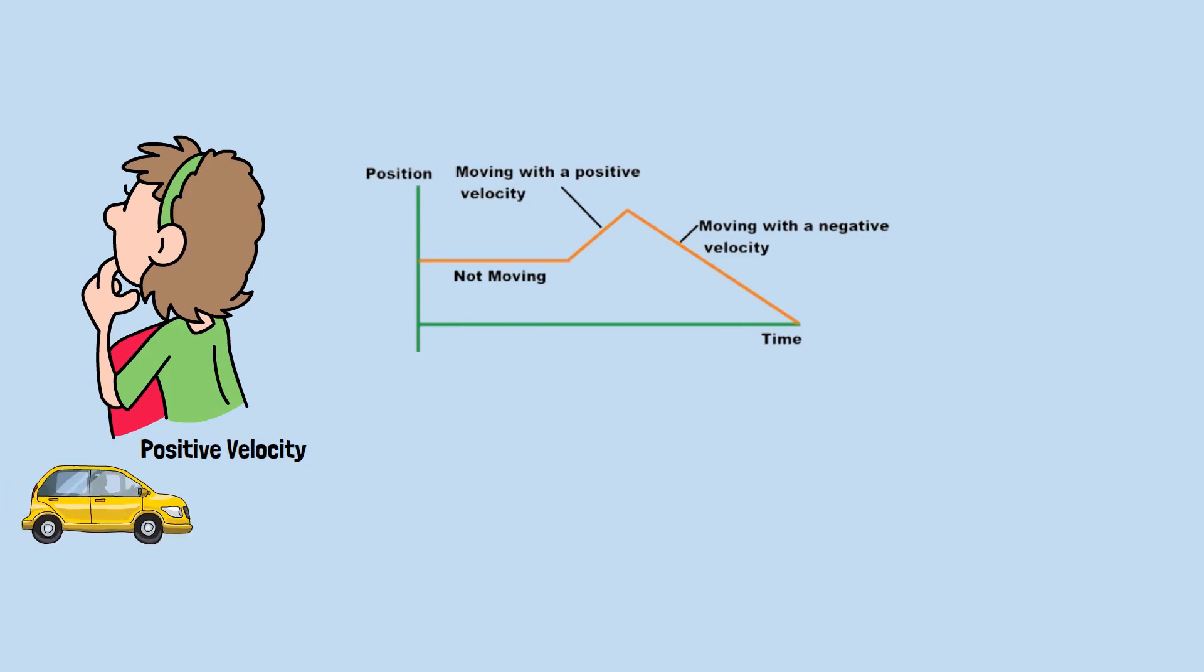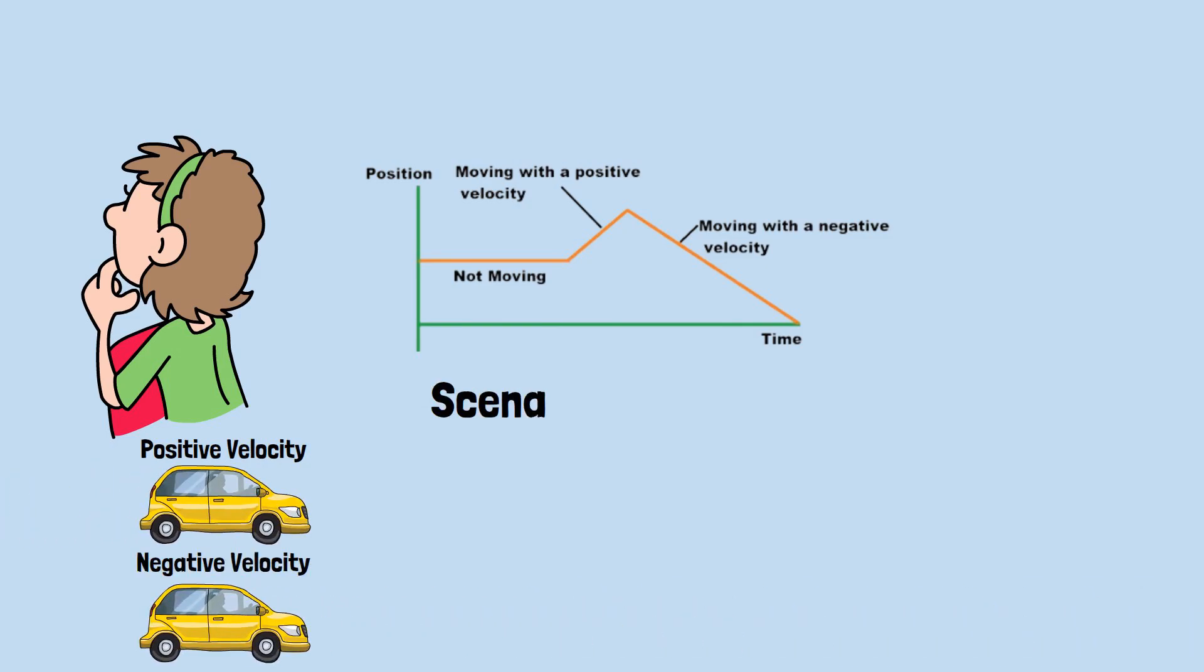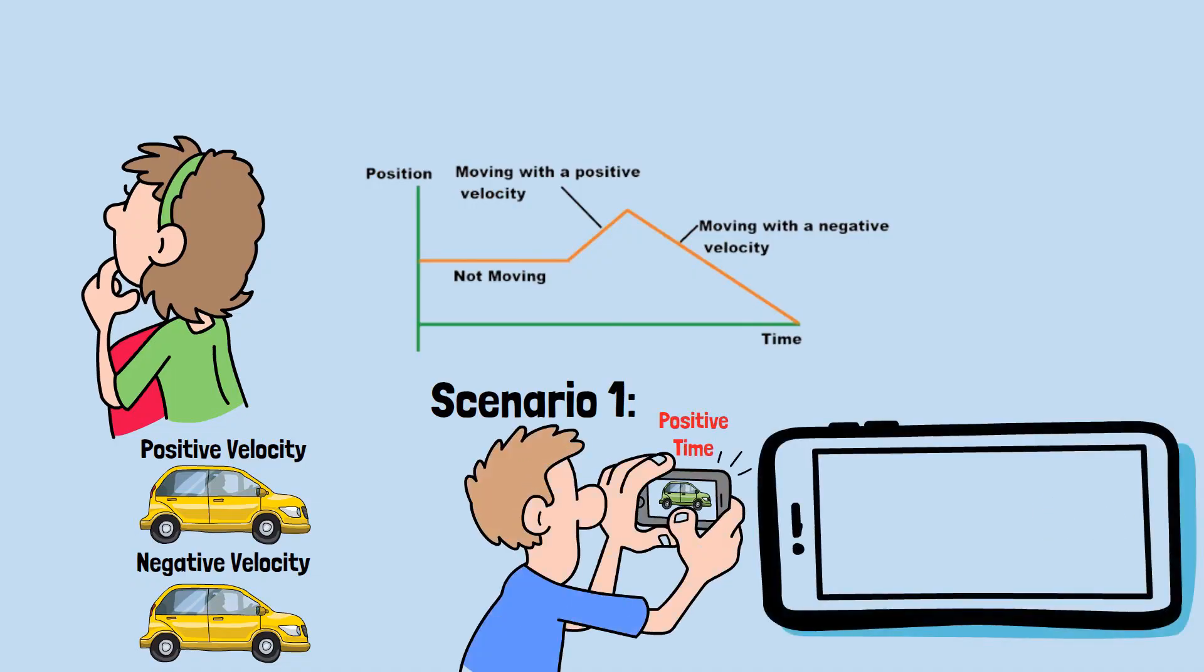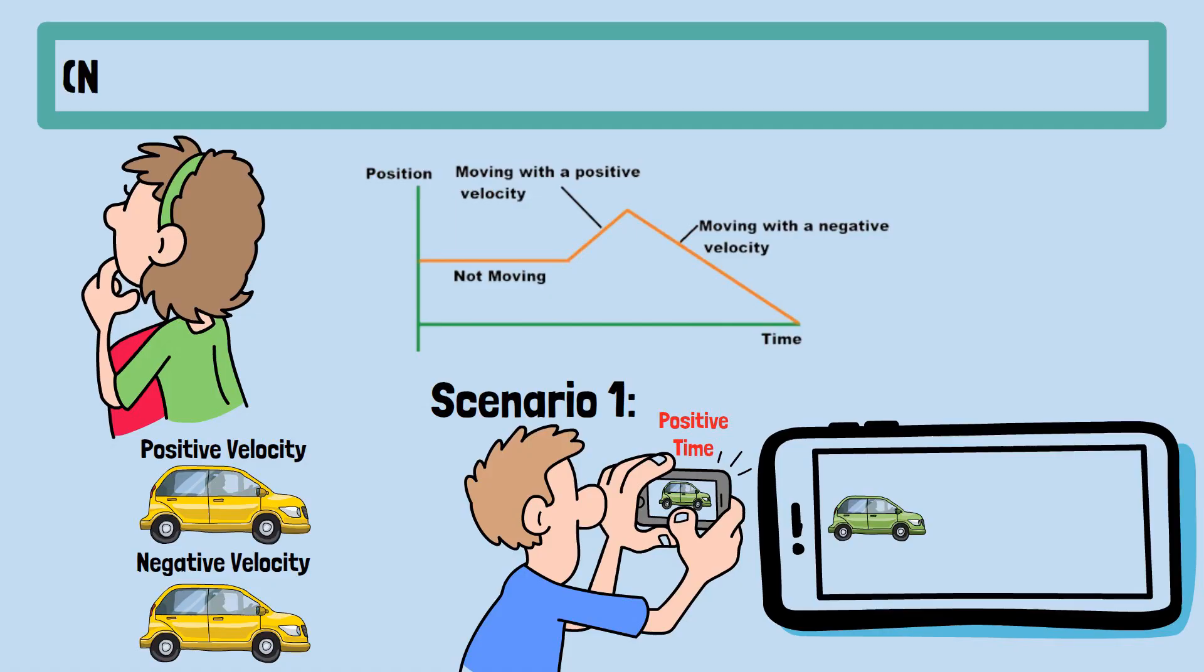Here's another way to think about it using concepts from physics. In physics, velocity can be positive or negative depending on direction. Let's say positive velocity means moving forward, and negative velocity means moving backward. Scenario 1. A car is driving backward, negative velocity, and we film it moving normally, positive time. Result. The car appears to move backward on screen. Mathematical representation: negative velocity × positive time = negative displacement.